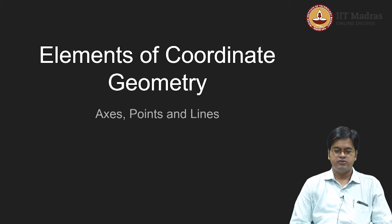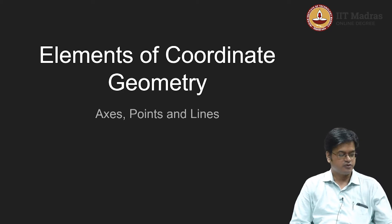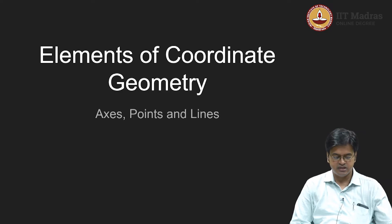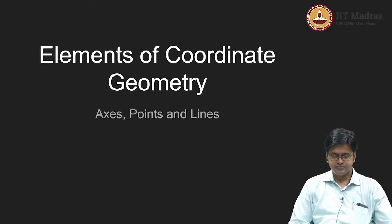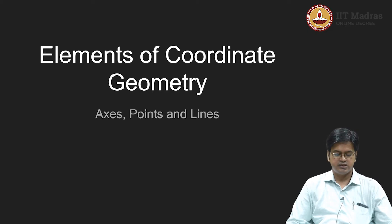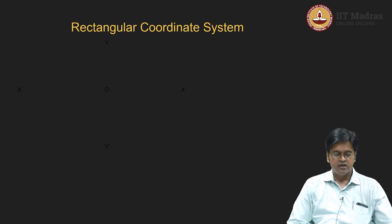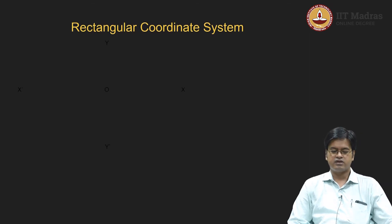Hello students, today we are going to see some elements of coordinate geometry. Let us try to identify these elements as axis, points, and lines. We have already seen in basic geometry what are points, lines, and planes. We will further study this and study some algebraic properties using coordinate geometry of these particular geometric objects. In that context, first we need to revise our rectangular coordinate system.